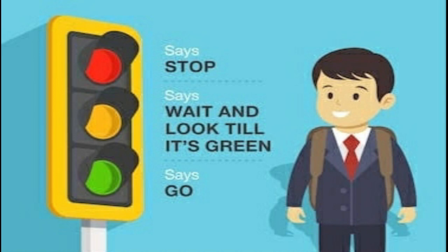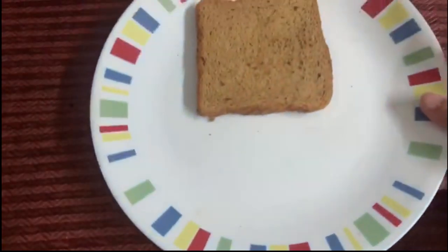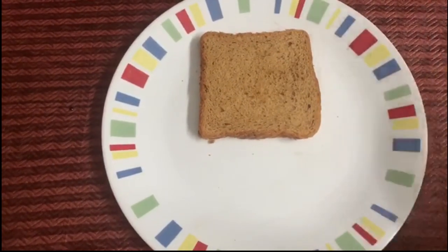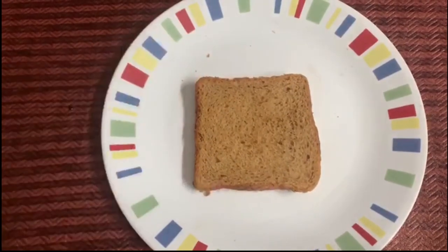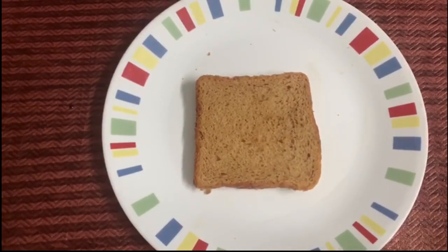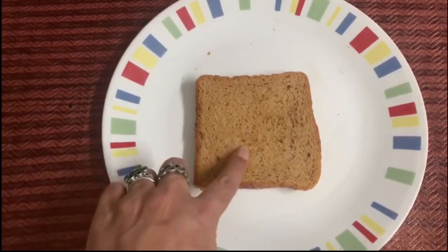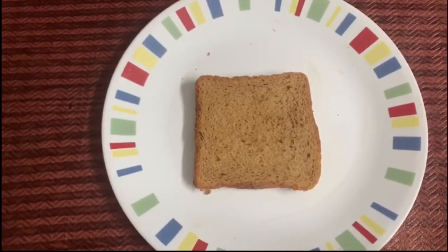We'll be making a traffic lights sandwich today. Enjoy making the sandwich with me, and after making it, enjoy eating it! Let's get started. First, I'll tell you what we are going to use. The sandwich we're going to make is an open sandwich — not a closed sandwich. So first, we'll take one slice of bread.